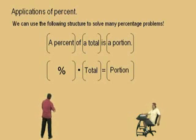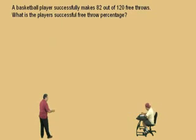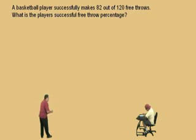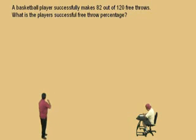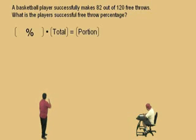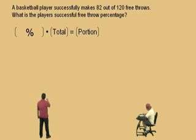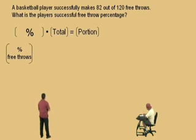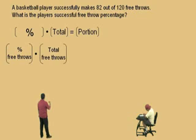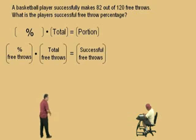Here's our first problem. A basketball player successfully makes 82 out of 120 free throws. What is the player's successful free throws percentage? Here's our format: a percent of a total is a portion. In this problem, our percent represents the percent of free throws that are made, our total is our total free throws, and our portion is the successful free throws.